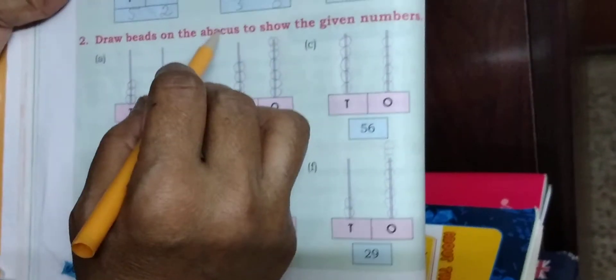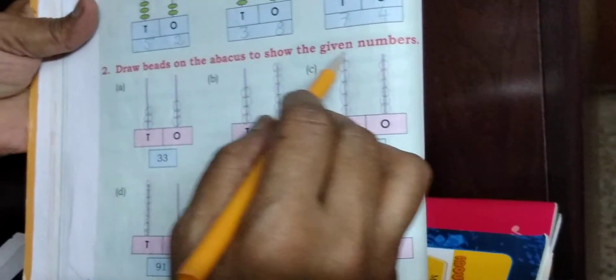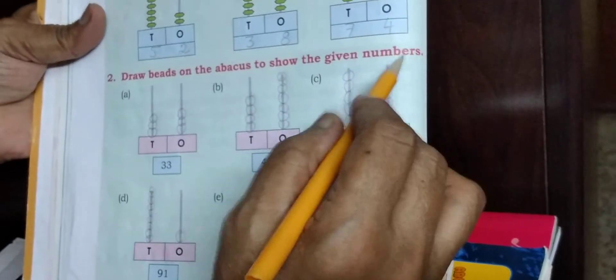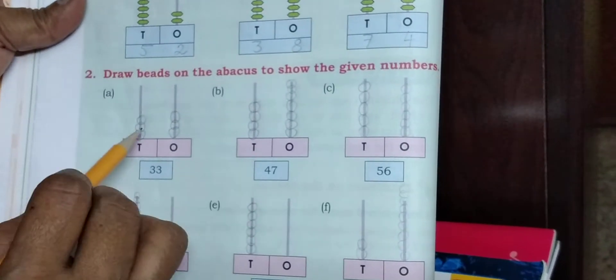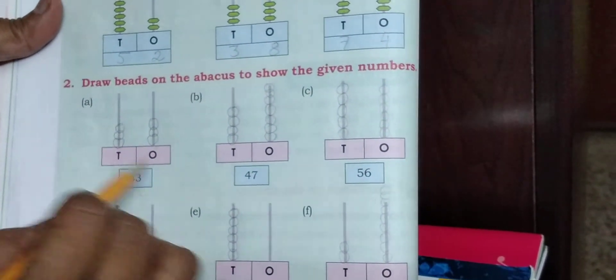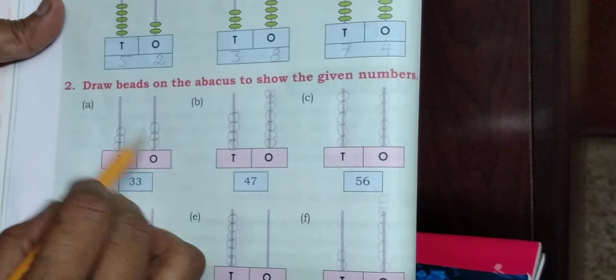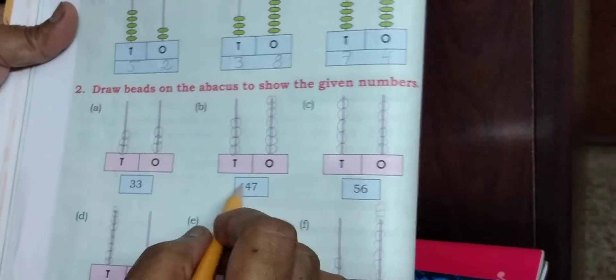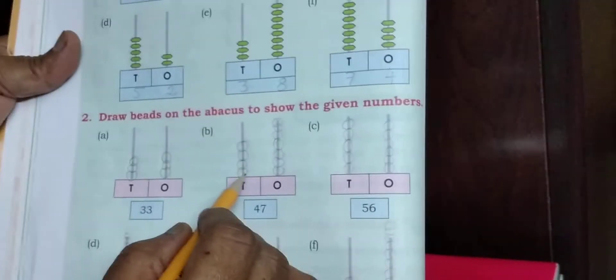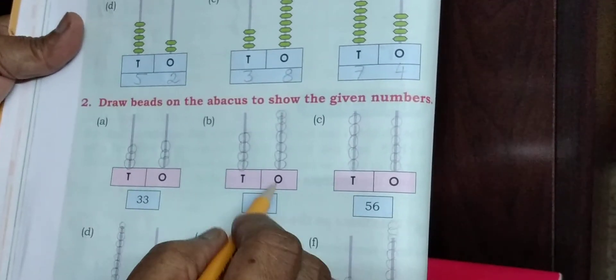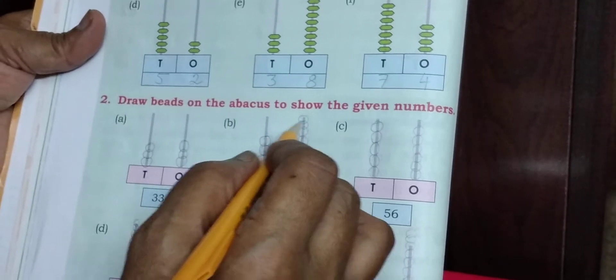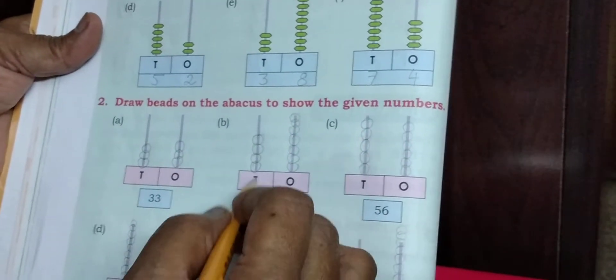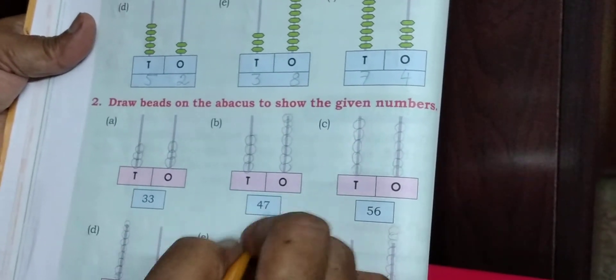Draw the bits on the abacus to show the given numbers. 33: 3 tens, 3 ones. 47: 4 tens, 1, 2, 3, 4. 7 ones: 1, 2, 3, 4, 5, 6, 7. 47.